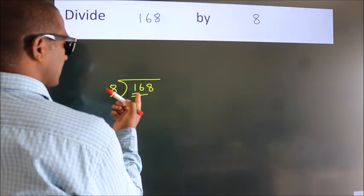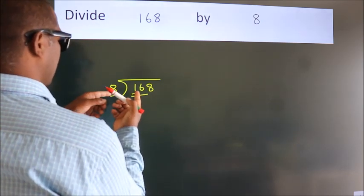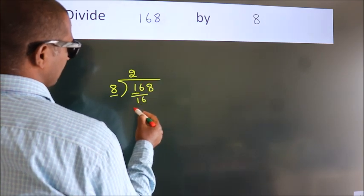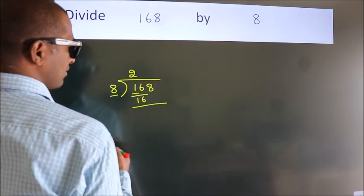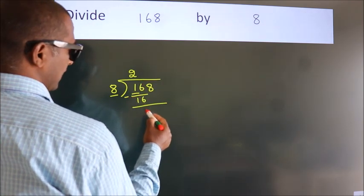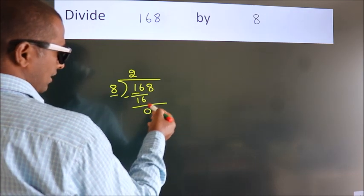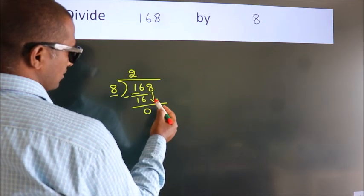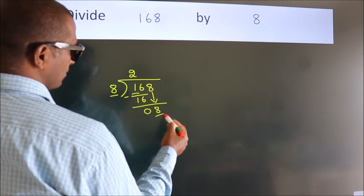When do we get 16? In the 8 table. 8 twos, 16. Now we should subtract. We get 0. After this, bring down the beside number. So, 8 down, 8.